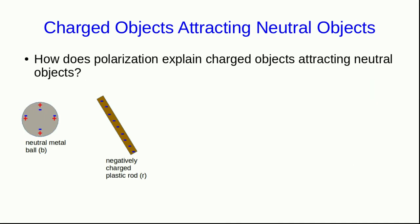Understanding polarization turns out to be the key to understanding why charged objects attract neutral objects. Let's think about the familiar situation of a charged plastic rod being brought near a neutral metal ball. As the rod is brought close to the ball, it repels the electrons in the ball. And because the electrons in the ball are mobile, because the ball is made of metal, they'll tend to move away from the rod.